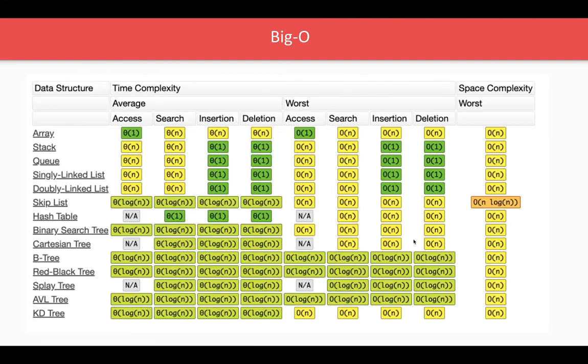And we have a lot of different data structures: array, stack, queue, singly linked list, binary search tree which is O(log n), B-tree, red-black tree, AVL tree. These are just for notation.